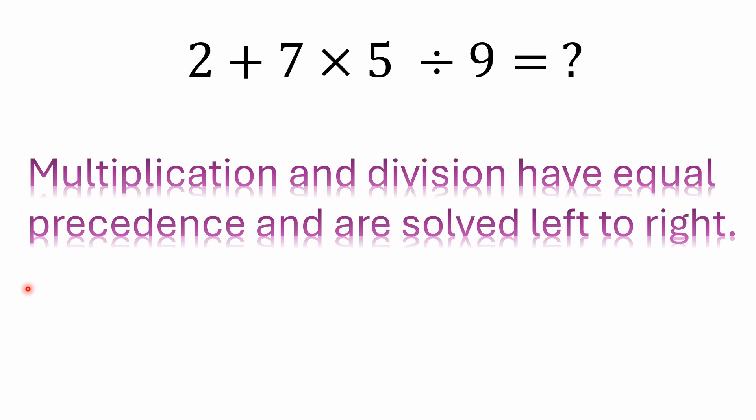There actually was an old interpretation back in the 1600s on the obelus where everything to the left was considered a numerator and everything to the right a denominator. So with that old interpretation you would actually be solving 7 × 5, adding 2 to that.